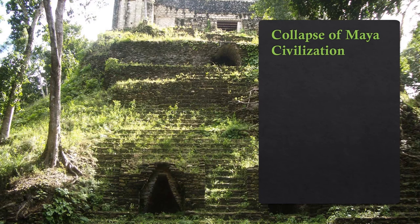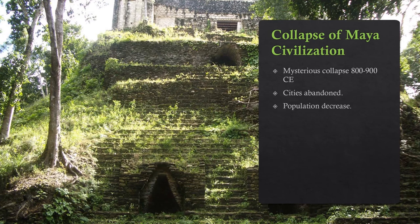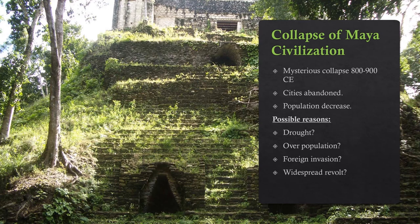Sometime during the 9th century CE, Maya civilization collapsed — the cities were abandoned and reclaimed by the jungle, and populations likely decreased significantly throughout their territory. The reasons for this collapse are still largely a mystery; possible explanations include drought, overpopulation, a foreign invasion, or widespread revolt. However, while the great Maya cities were abandoned, the Maya people did not disappear — their descendants continued to live in the area, farming cacao, and their culture and language have persisted right to this day. The Maya number around 6 million people today, making them one of the largest single groups of indigenous peoples in the Americas.